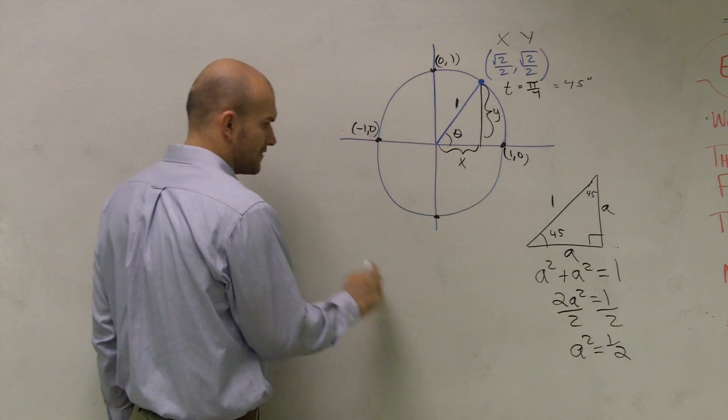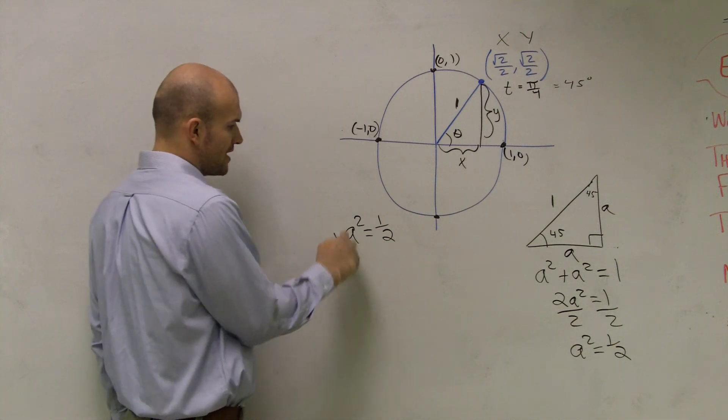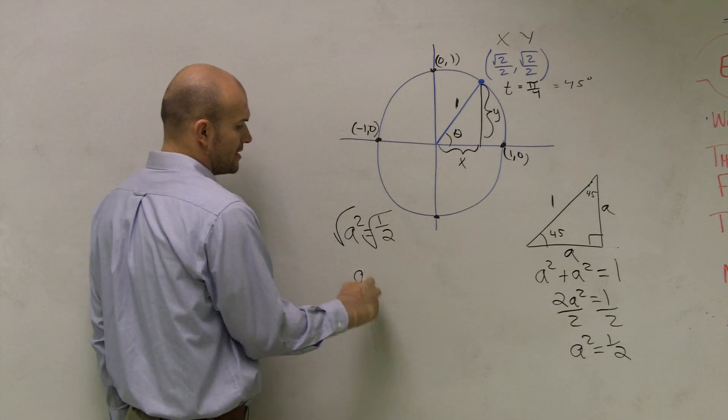I'm going to continue my work over here. If I have A squared equals 1 half, to get rid of that squared, I have to take the square root.